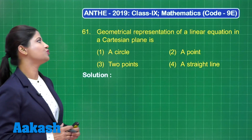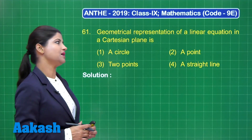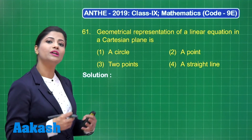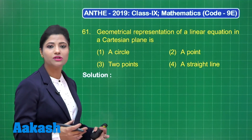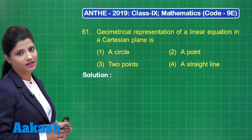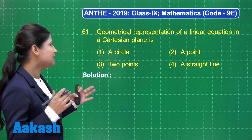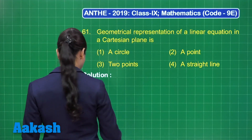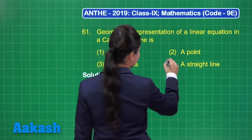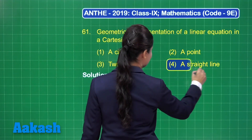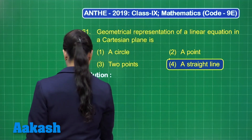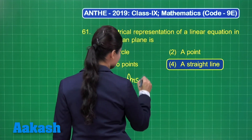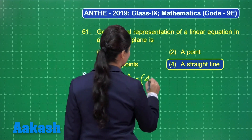When we talk about the geometrical representation of a linear equation, plotting a linear equation using the points lying on it forms a straight line. A linear equation whenever plotted in a Cartesian plane always forms a straight line. So the correct answer for this question is option 4.